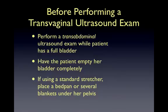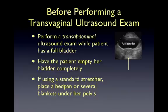Before performing a transvaginal ultrasound exam, there are several steps necessary prior to the actual exam. First, attempt a transabdominal ultrasound to evaluate the patient's symptoms. The uterus and ovaries are best visualized when the patient has a full bladder. The anechoic fluid in the bladder acts as an acoustic window for the sound waves to travel through and better illuminate the more posterior uterus and ovaries.